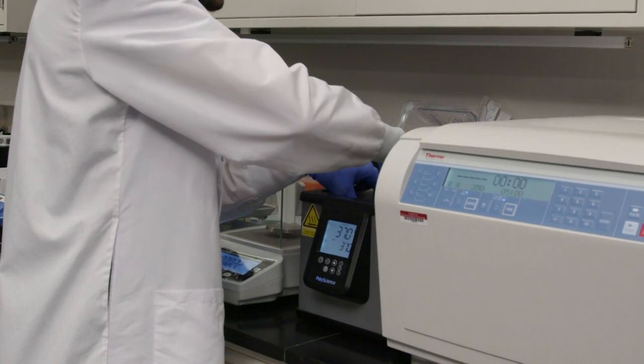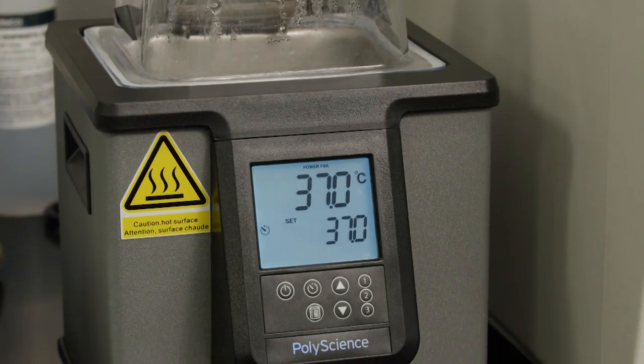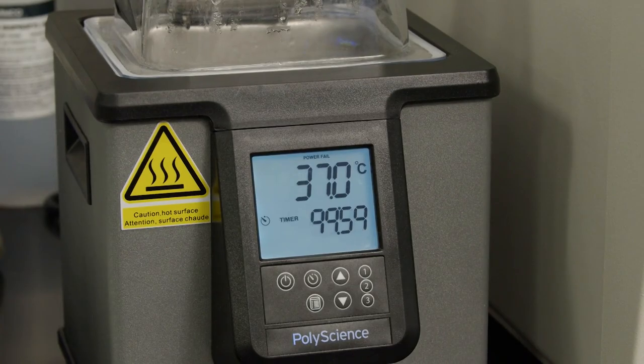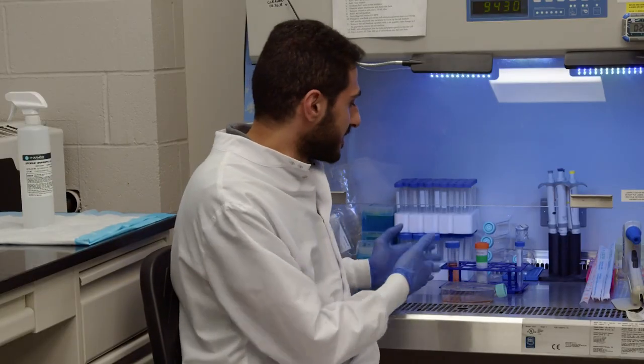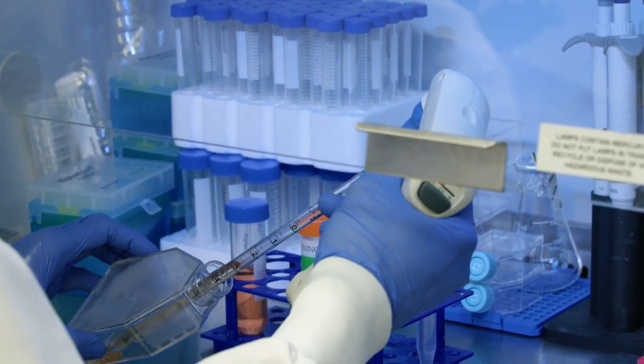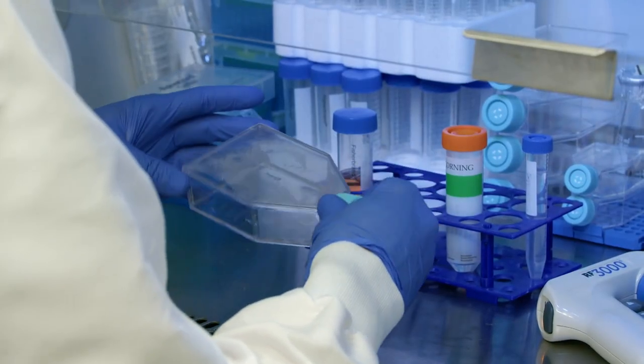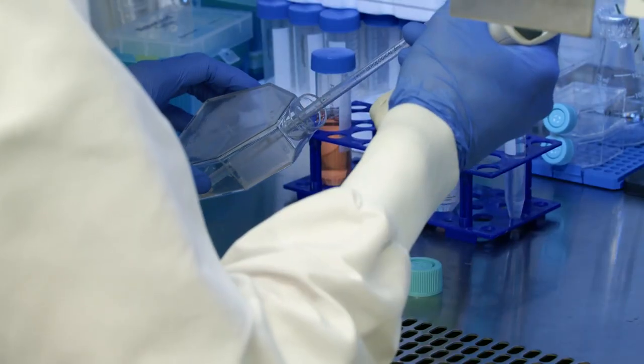Now we had cells incubating in the incubator at 37 degrees which is the body temperature and 5% carbon dioxide. When the cells are growing inside the flask in the incubator, they adhere to the bottom of the flask. So we need to put some enzymes to lift them up from the bottom of the flask, spin them down in a centrifuge and then we can collect the cells and do whatever we want with them.